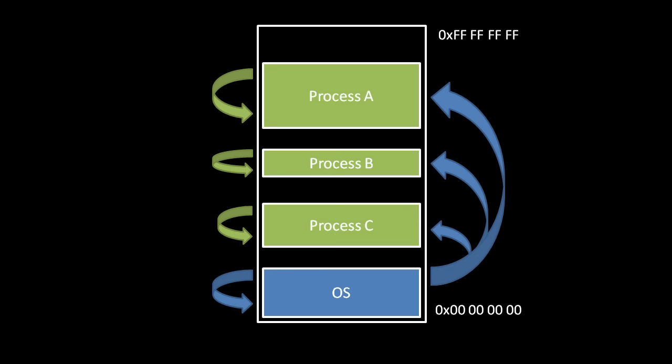Processes not only share the CPU cores, they of course must also share the system memory. It's the OS's job to regulate the processes' use of memory to ensure that each process doesn't interfere with the portions of memory used by other processes and by the OS itself.